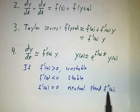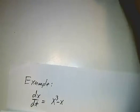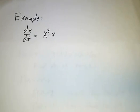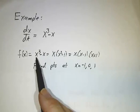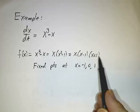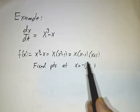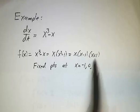So for example, you might look at the equation dx/dt = x³ - x. So the first thing we do is we find the fixed points. x³ - x is x times (x² - 1). We factor it, and we see that there are fixed points at 0, 1, and -1.